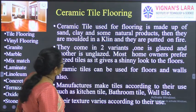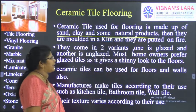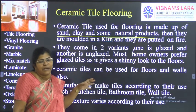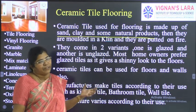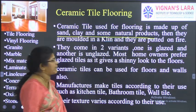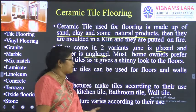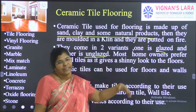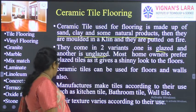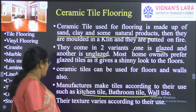Ceramic tile flooring is made up of sand, clay and some natural products. They are molded and put in a kiln and fired. Similar to a roof tile, this porcelain material is heated in a kiln to a temperature of 850 degrees centigrade. There are two types: glazed and unglazed. Glazed tiles are very polished and shiny; unglazed tiles are rough. Homeowners prefer glazed tiles, but in bathrooms we go for unglazed tiles. Ceramic tiles can be used for floors and walls, and manufacturers make tiles specifically for kitchen, bathroom, and wall use.